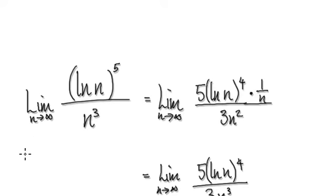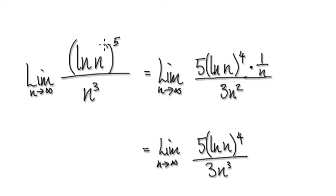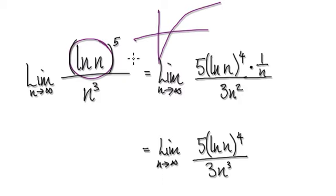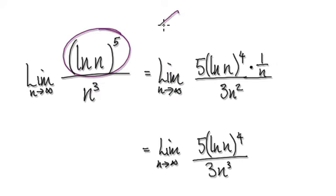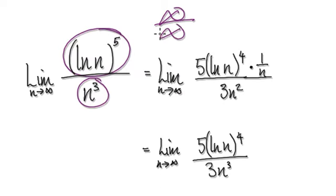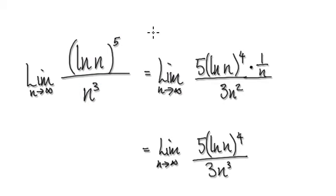To do this, look at the natural log graph - natural log is always climbing. When you take it to a power, this thing here is going to head towards infinity, and the denominator is also heading towards infinity. So you've got infinity over infinity, which is an indeterminate form.